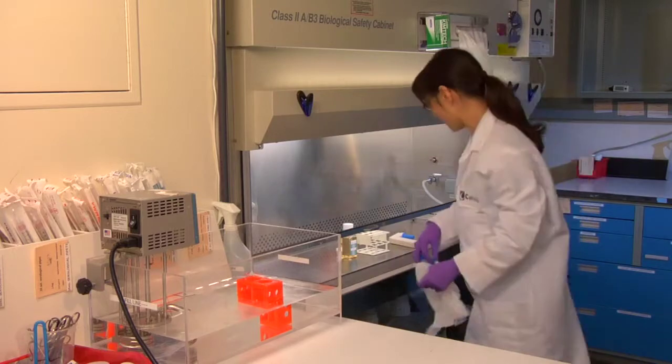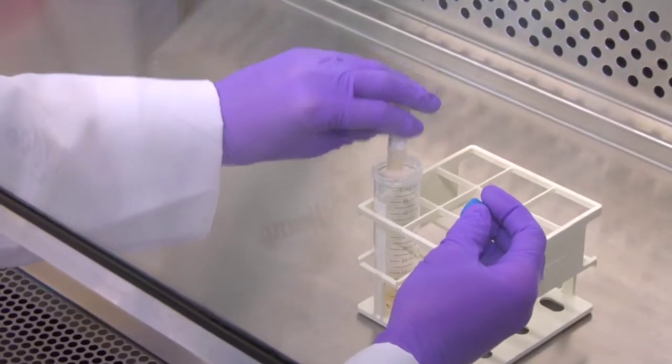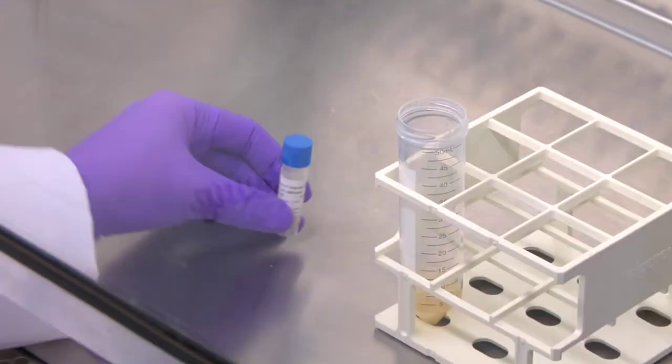Wipe the vial with a kimwipe and take the vial to the biological safety cabinet. Pour the vial into the 50 milliliter conical tube of pre-warmed InVitroGRO CP medium.